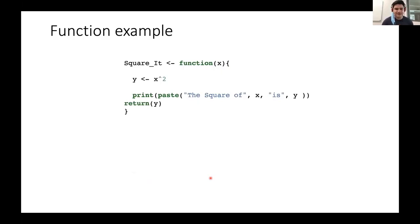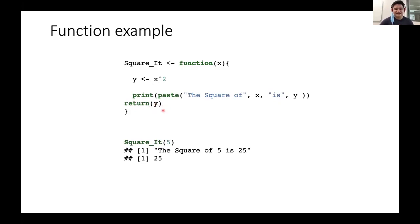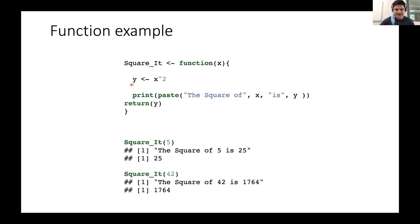There's also the return() statement. Adding return(y) at the end of the function explicitly returns the numeric value. Sometimes with larger functions R won't automatically return the result, so you use return() to ensure it does. With return(y) added, square_it(5) still prints 'the square of 5 is 25' while also returning the numeric value 25, and square_it(42) returns 1764.